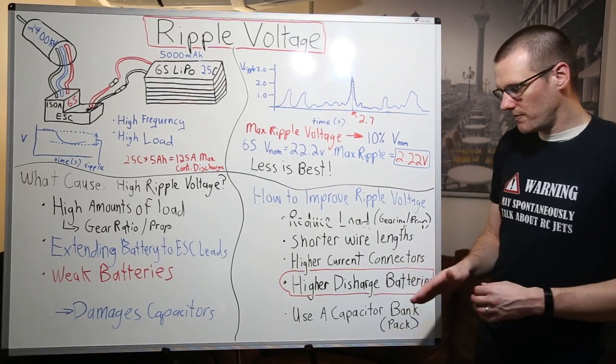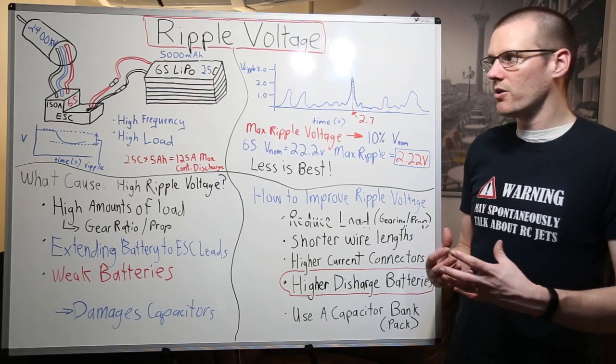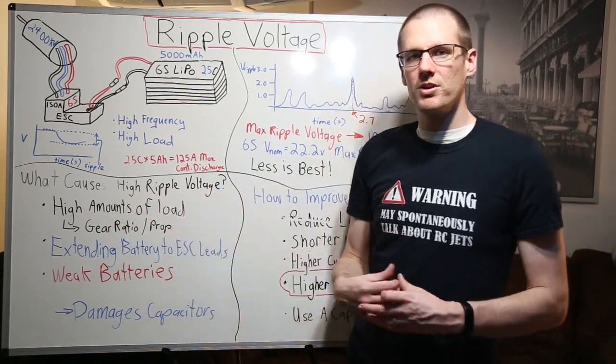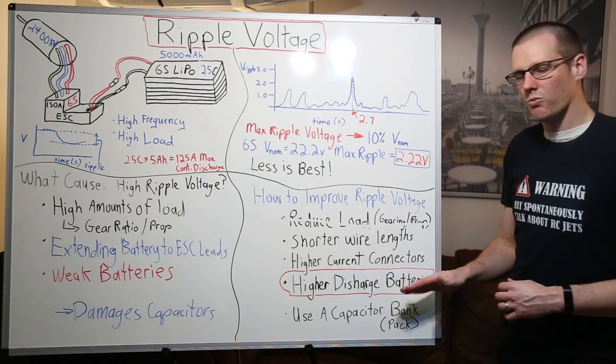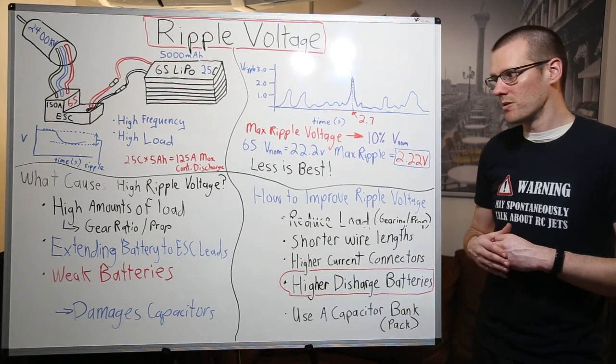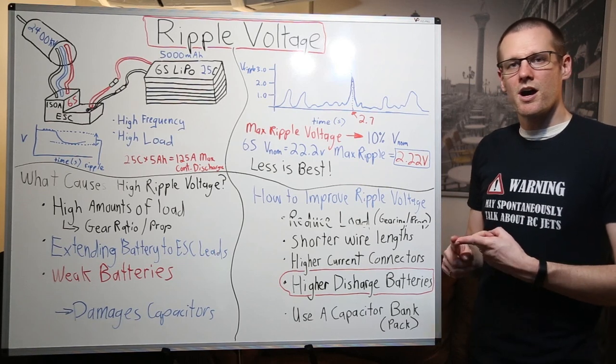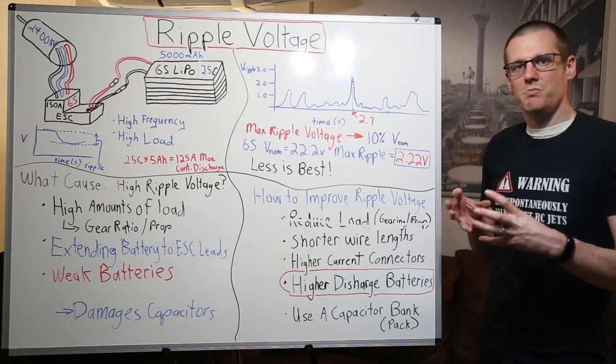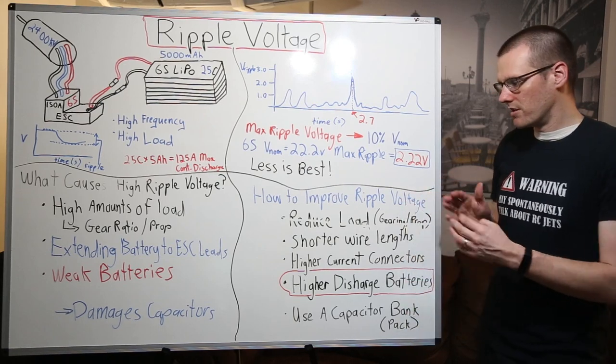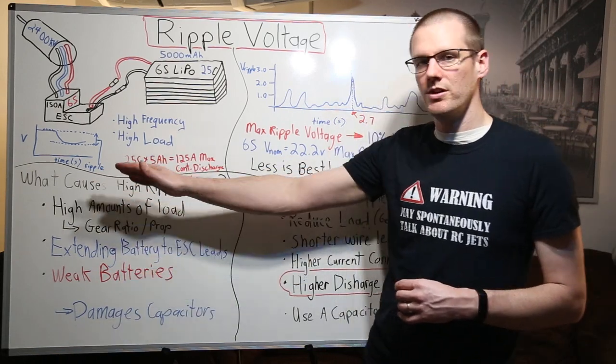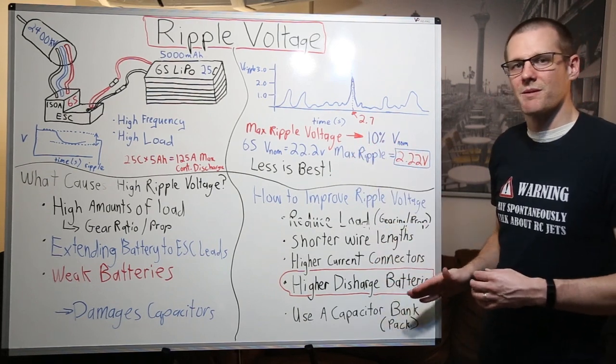So the last point that we have here is use a capacitor bank. Now cat packs, as it's in brackets here, is also something that's going to help out in these certain situations. If you have high amounts of load, maybe you're running like a top speed radio control car that goes in excess of 100 miles an hour, 160 kilometers an hour, this is maybe an area where you'd want to use a capacitor pack. Now we do have a video, I can link it in the description of this video, on capacitor banks specific to radio control cars. However, the same idea would apply to helicopters, planes, and also boats if you meet the criteria there. So you can check that video out if you want to see more of that on cat packs. This is definitely something that will improve the ripple voltage if one of these is happening within your system. Even if you've extended your battery pack leads and now you're seeing excessive amounts of ripple voltage because of it, a cat pack is something that will help you.